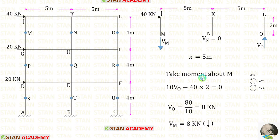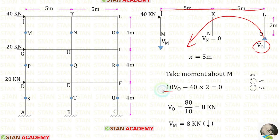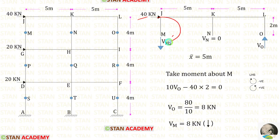Now let us take moment about M and find VO. In this case we are moving towards the left-hand side — clockwise will be negative and anti-clockwise will be positive. VO is acting in the anti-clockwise direction, so that will be positive and the distance is 10, giving 10·VO. The load of 40 kN is acting in the clockwise direction, so that will be negative and the distance is 2. Finally, for VO we are getting 8 kN.